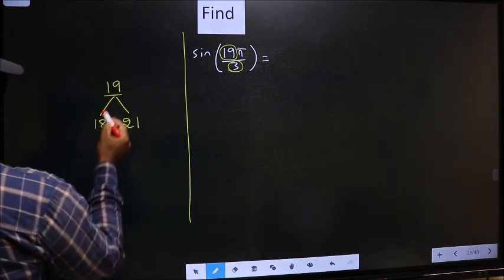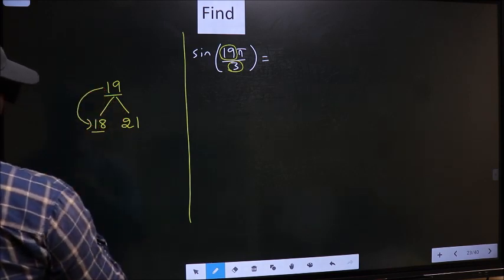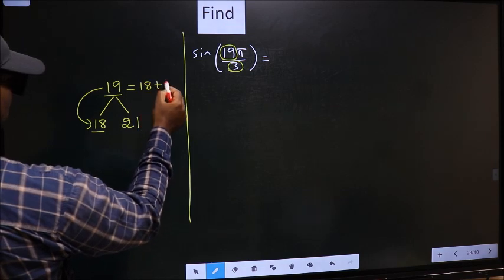So 19 is close to which multiple? It is close to 18. So 19 now should be written as 18 plus 1.